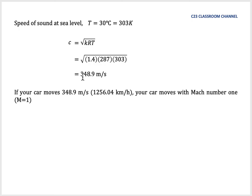We substitute the value of specific ratio of air 1.4 and gas constant 287 and temperature 303. So we get around 348.9 m/s. This means that if your car moves at 348.9 m/s or around 1,256 km/h, your car moves with Mach 1.